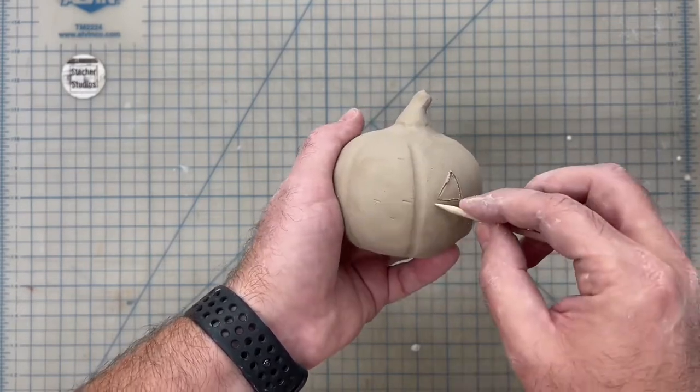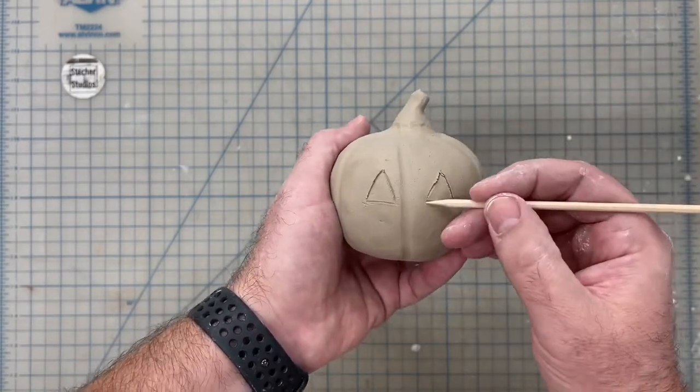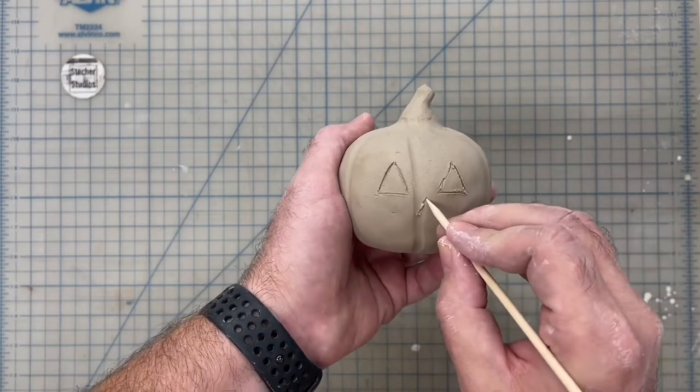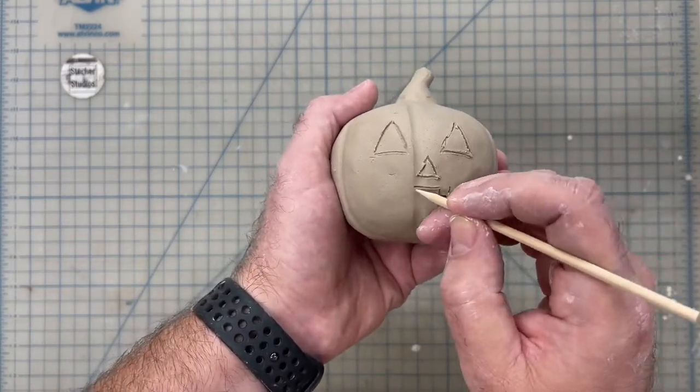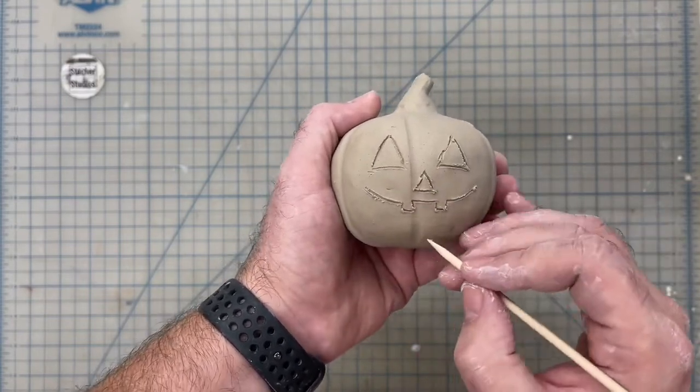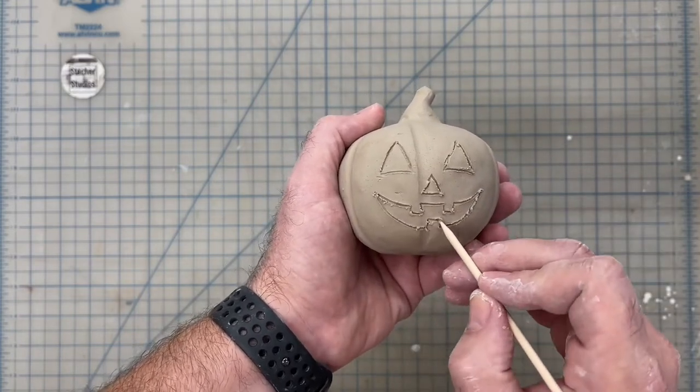We're going to use a stylus tool to start drawing the shapes and outline of the eyes, mouth, and nose. I've chosen to do a traditional jack-o'-lantern with triangle eyes, nose, and kind of a goofy grin. Feel free to experiment and try out different designs and see what you like.